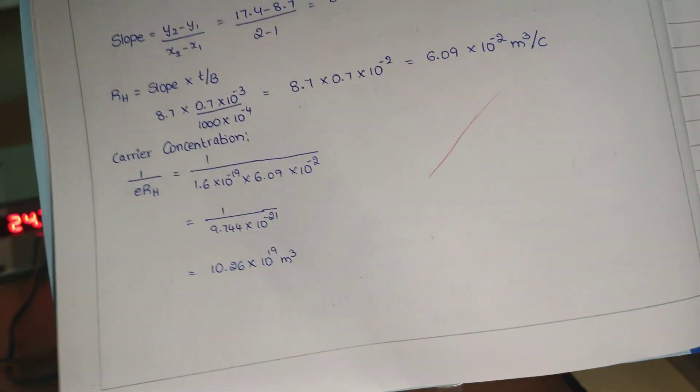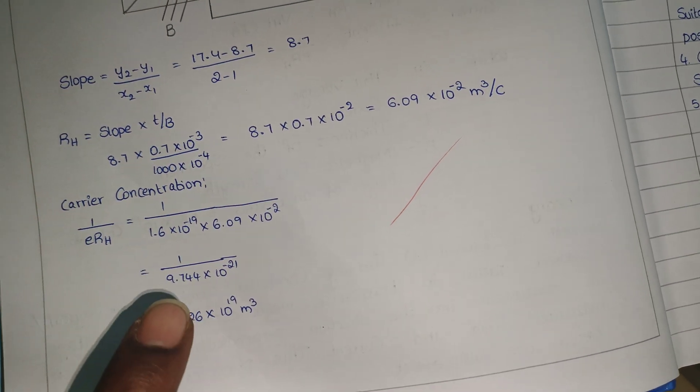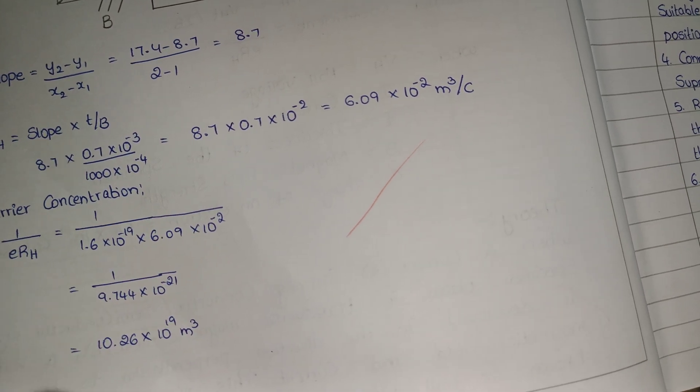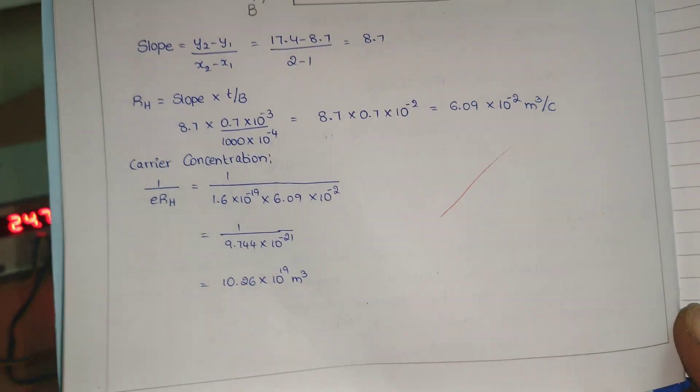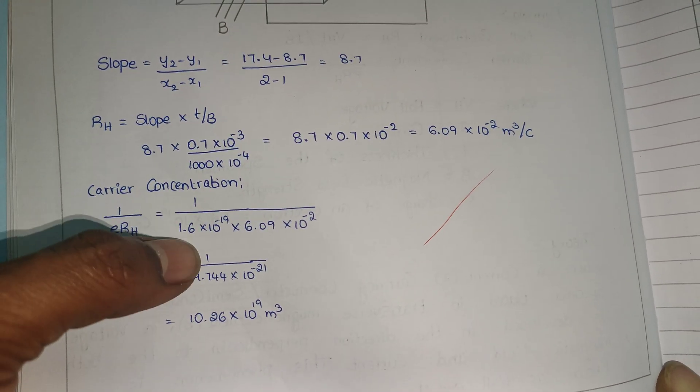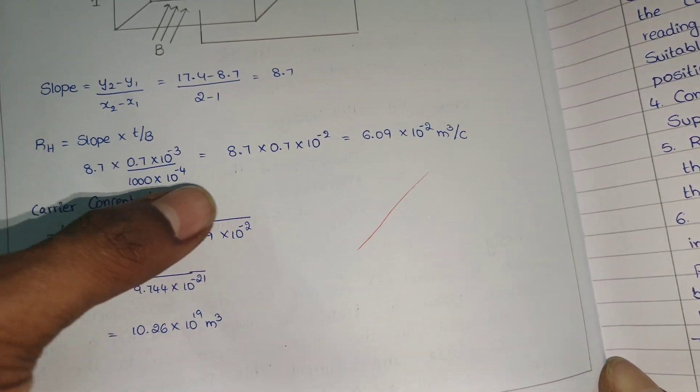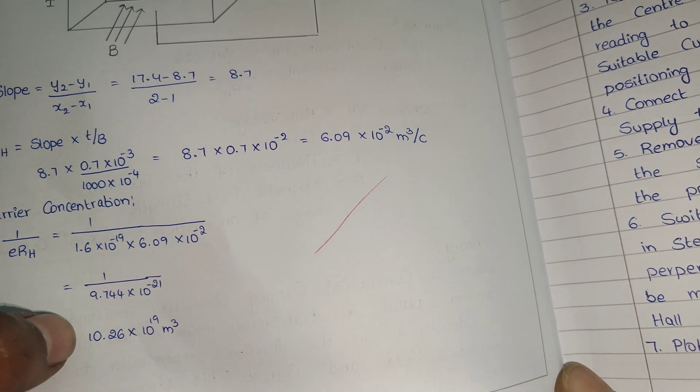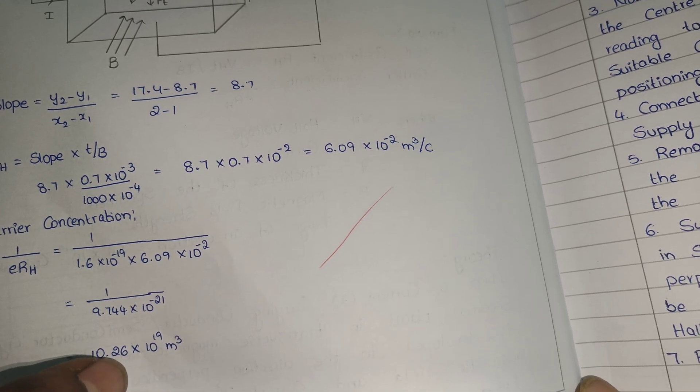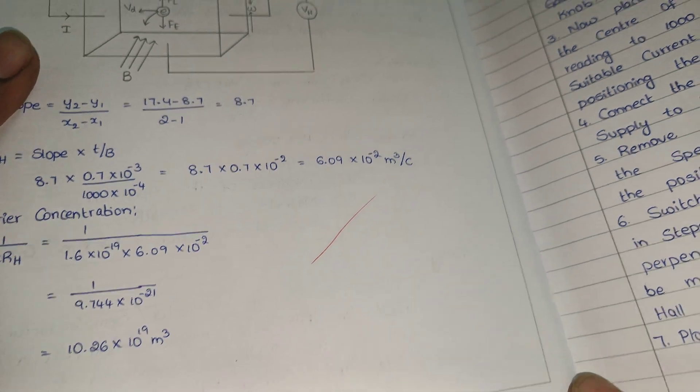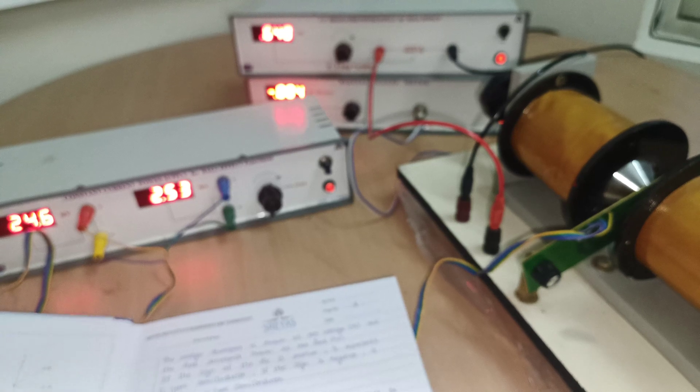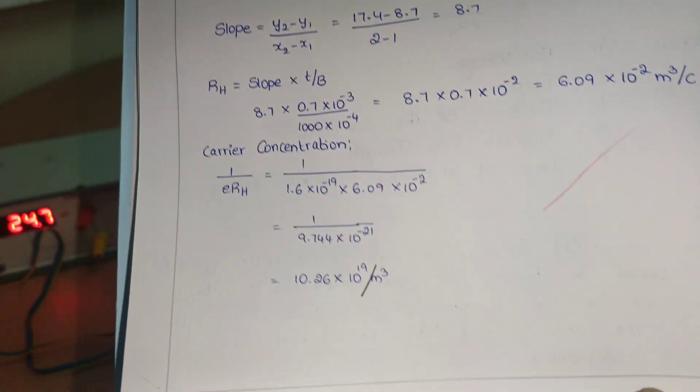Once Hall coefficient we got, then we can calculate carrier concentration, the number of charge carriers per unit volume. For that, here the charge carriers are holes, majority charge carriers. Carrier concentration can be calculated by using 1 by E into RH: 1.6 into 10 to the power of minus 19 into RH value, 6.09 into 10 to the power of minus 2. By substituting all these values, we are getting carrier concentration value 10.2 into 10 to the power of 19 per meter cube.